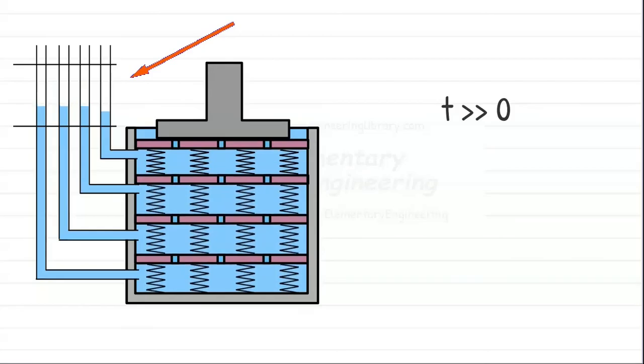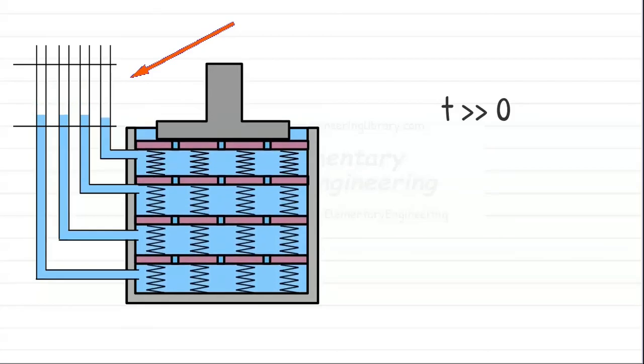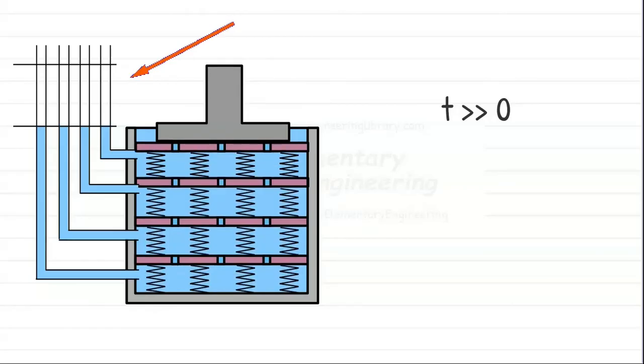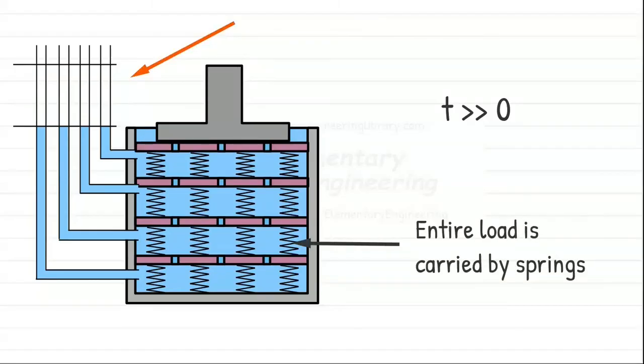Finally, after a long time, this flow stops and equilibrium is reached. Excess pore water pressure everywhere becomes zero and the entire load is carried by compressed springs. This signifies the end of consolidation settlement, with the system reaching a more stable, densified state.